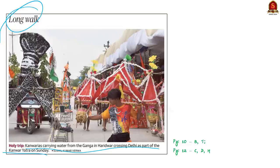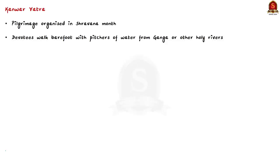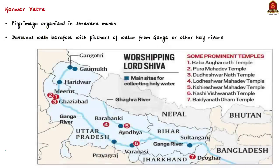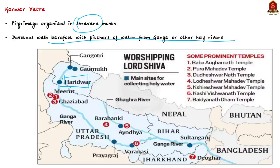In this pilgrimage, Shiva devotees generally walk barefoot carrying pitchers of holy water from the Ganga or other holy rivers. In the Gangetic Plains, the water is taken from pilgrimage sites such as Haridwar, Gaumukh, and Gangotri in Uttarakhand, Sultan Ganj in Bihar, and Prayagraj, Ayodhya, or Varanasi from Uttar Pradesh. This water is used by pilgrims to worship Shivalingas at shrines of importance, including the 12 Jyotirlingas or certain specific temples like Pura Mahadeva and Augarnath Temple in Meerut, and Kashi Vishwanath Temple in Varanasi.